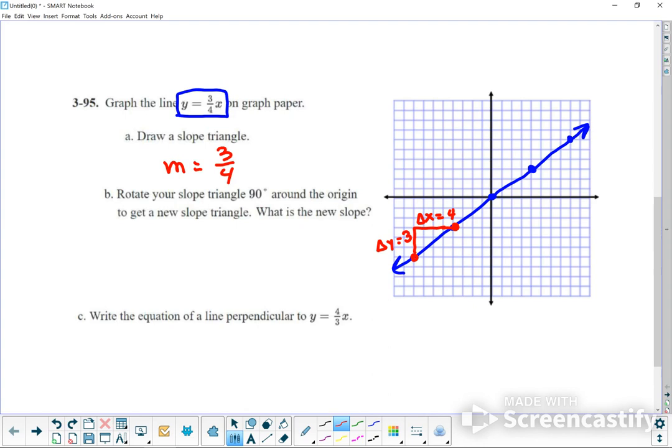Rotate your triangle 90 degrees around the origin. Get a new slope triangle. So 90 degrees around the origin. And it doesn't specify clockwise or counterclockwise. So I'm okay with that. So 90 degrees. If I go left 4 and down 3, which means that I would have to, if I rotate 90 degrees, let's go clockwise. Which means that I'm going to be going in this direction. So this left 4 and down 3 is now going to become up 4 and left 3.